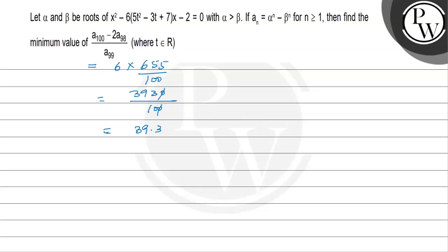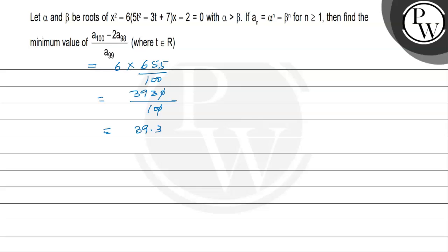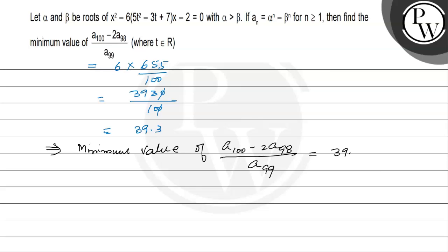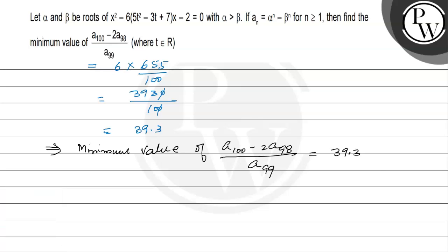So the minimum value of (a100 minus 2*a98) divided by a99 is equal to 39.3. This is our final answer, and the minimum value of the given expression is 39.3.